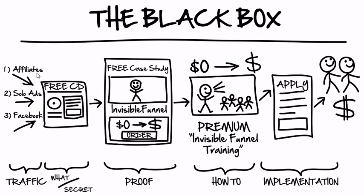So this is the black box funnel — a three-step process. We start with a free plus shipping offer. Immediately afterwards, we give them a one-time offer for an invisible funnel where they pay zero down and then $97 later. At the end of this webinar, we ask them to apply for our high-end program. When we tested this black box against our current funnel, it ended up generating three times the revenue — three to one — over what we were making through our old traditional funnel. We got more customers, happier people, and it was a lot more fun. No selling: we just gave away a free CD, free access to an event, and a free application form. Taking selling out of the equation made us three times more money.